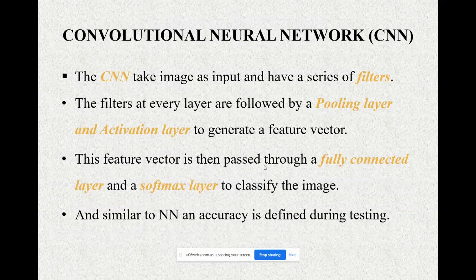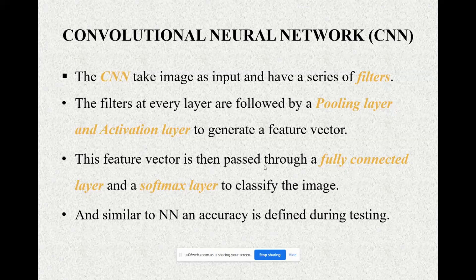A Convolutional Neural Network (CNN) is a category of deep learning which uses a number of filters, pooling layers, activation layers, and various other methods to determine the output. This feature vector is then passed through a fully connected layer and softmax layer to classify the image. Similar to neural networks, accuracy is defined during testing.